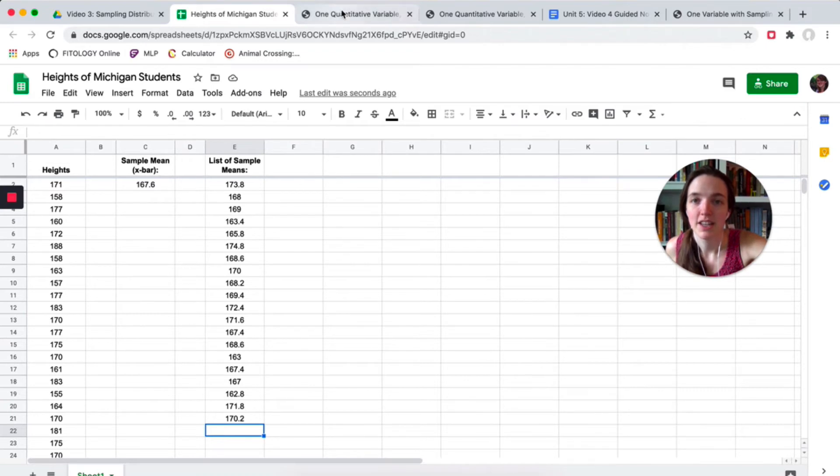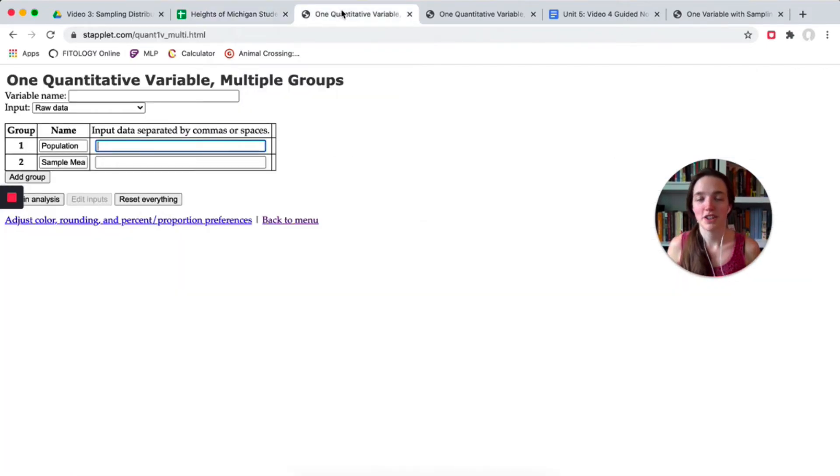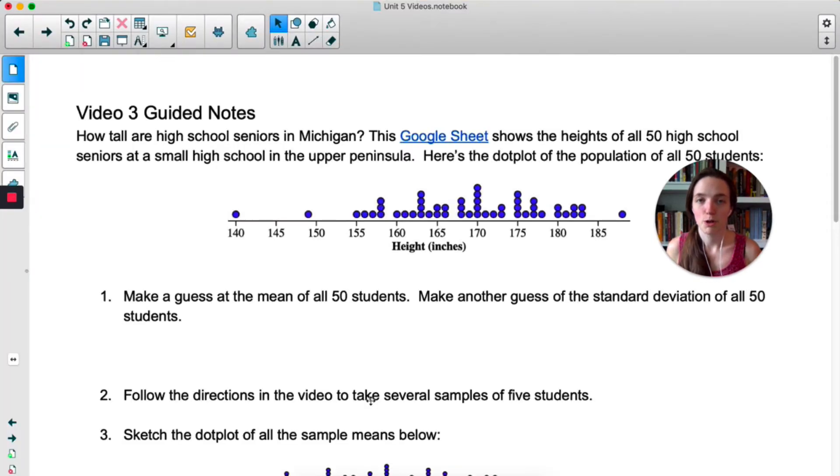That way they'll be stacked on top of each other, and you'll be able to easily compare their centers and their shapes. So in a moment, you're going to do at least five samples of your own, then make stacked dot plots of the population and the sample means, and do a sketch in your notes. Pause the video, hit play when you are done with those things.